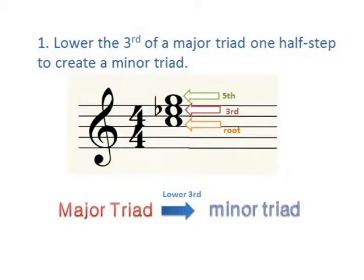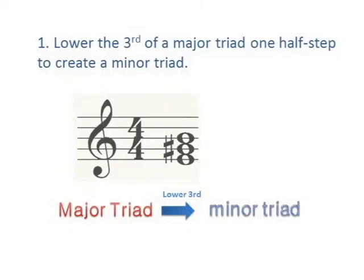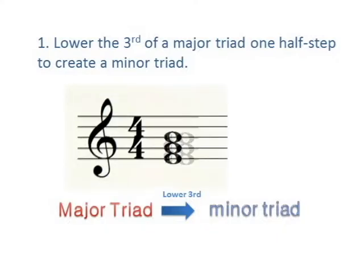E, G sharp, B is a major triad. By lowering the third, we find that E, G, B is a minor triad.